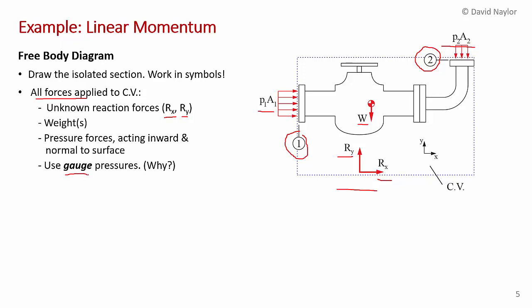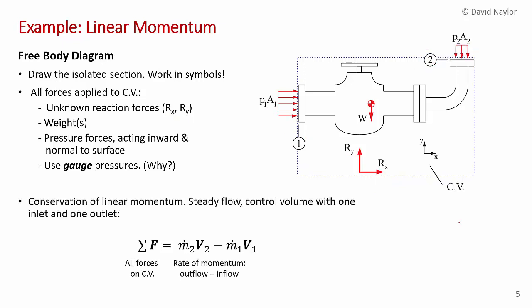Work in gauge pressures. If you use absolute pressure, you'd need to integrate the full pressure distribution over the entire object. By subtracting atmospheric pressure, you only need to consider pressure forces where gauge pressure is nonzero, greatly simplifying the problem.